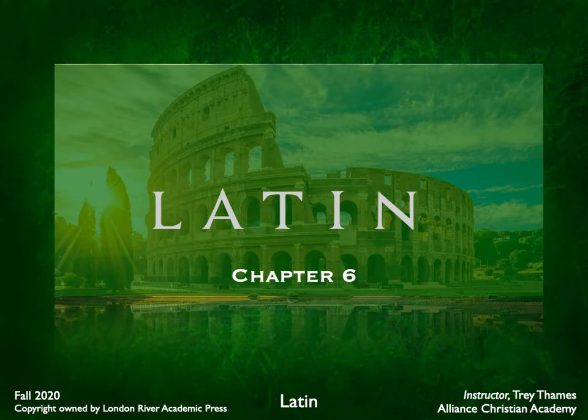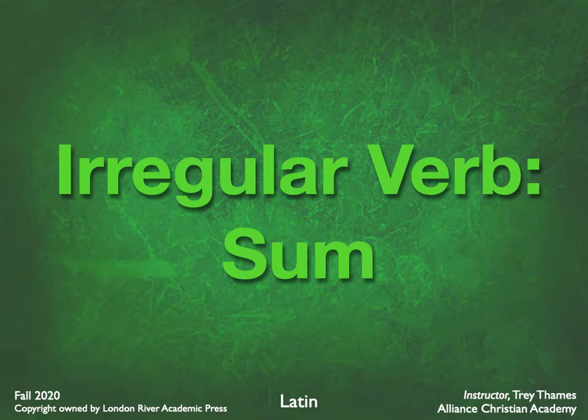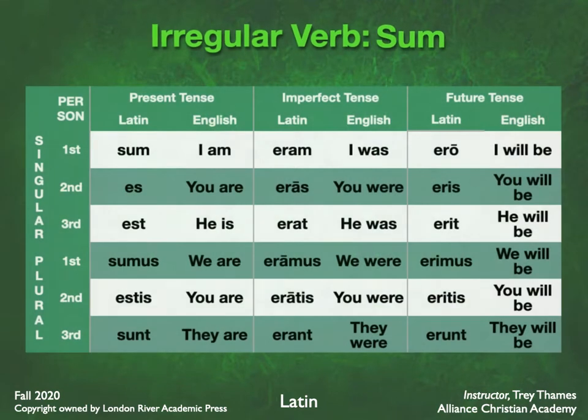Welcome to chapter 6. Let's look at a new verb — technically it's not new, I'm pretty sure you learned it last year — but this is an irregular verb. There are first conjugation, second conjugation verbs, even third or fourth conjugation, but this is what we call an irregular verb. It has an irregular pattern. This is the verb 'sum,' the to-be verb.